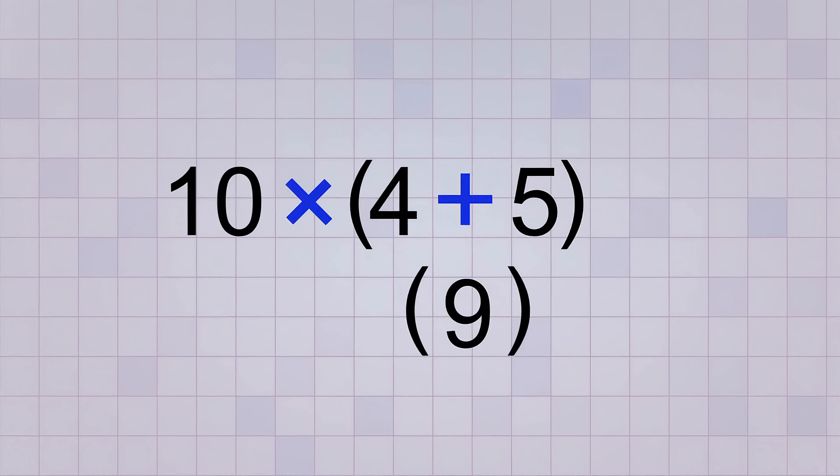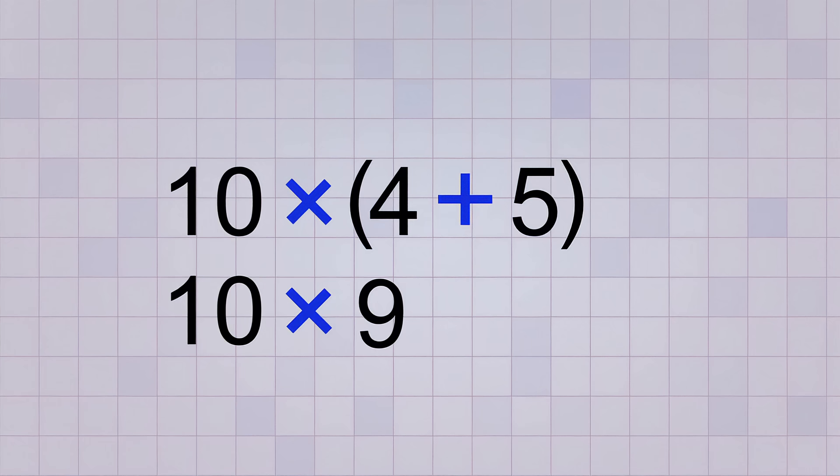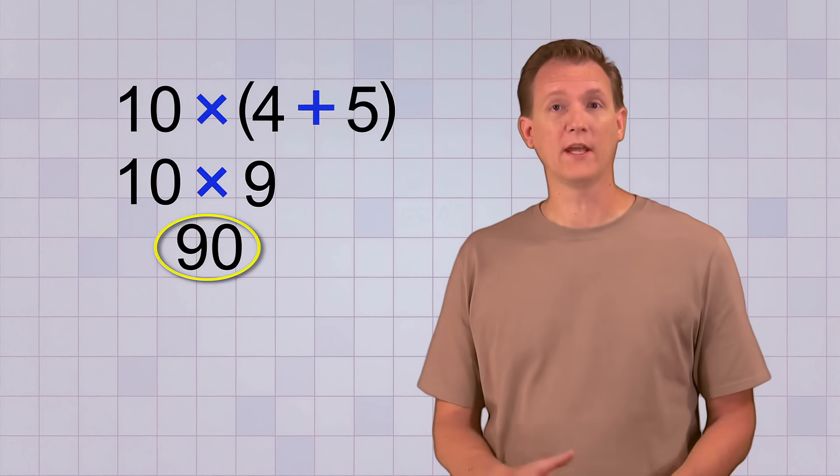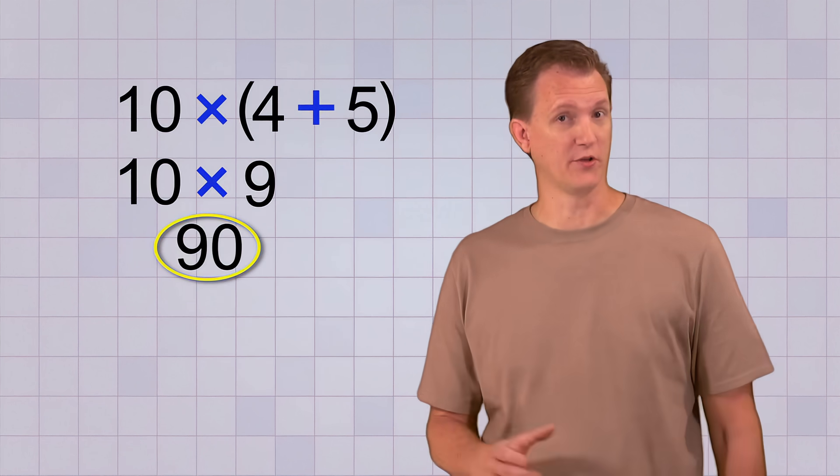Oh, and once you do the math that's inside parentheses and get a single number like this, you usually don't need to show the parentheses anymore. Now that the parentheses are gone, we just have one operation left to do. We multiply 10 times 9, and that gives us 90 as our final answer. So parentheses can really help you know what part of a problem you're supposed to do first.